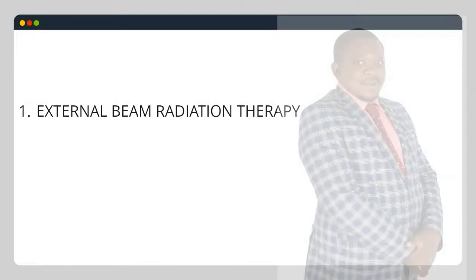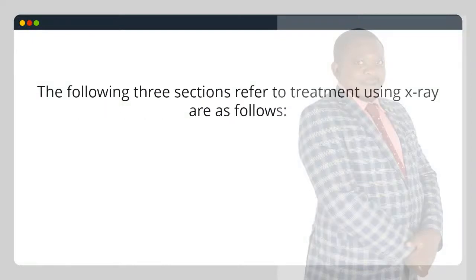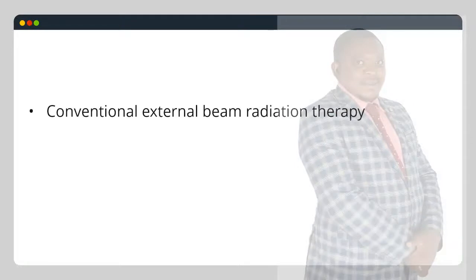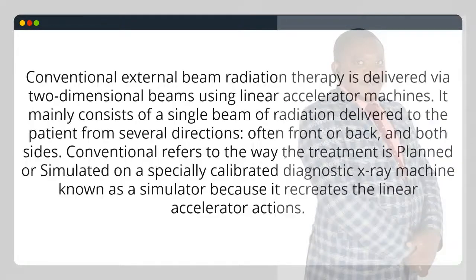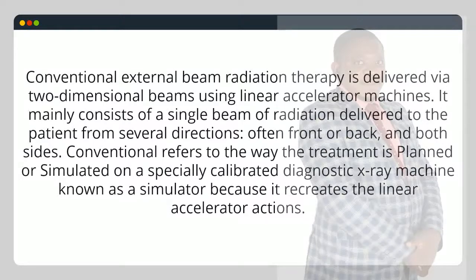External beam radiation therapy. The following sections refer to treatment using X-rays. Conventional external beam radiation therapy is delivered via two-dimensional beams using linear accelerator machines. It mainly consists of a single beam of radiation delivered to the patient from several directions, often front or back and both sides. Conventional refers to the way the treatment is planned or simulated on a specially calibrated diagnostic X-ray machine known as a simulator, because it recreates the linear accelerator actions.